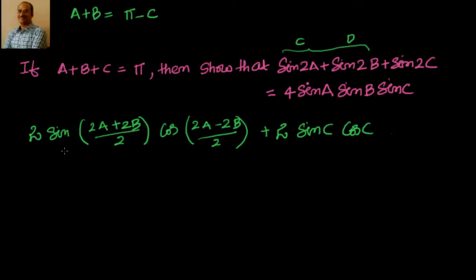Now look here — the approach should be that I should be able to take something common. In the answer I see there is sin c, so I should get sin c from the first term so I can take it common. Then I apply one more sum-to-product transformation to get the answer. Simplifying: 2a plus 2b over 2 is a plus b, and 2a minus 2b over 2 is a minus b, plus 2 sin c cos c.